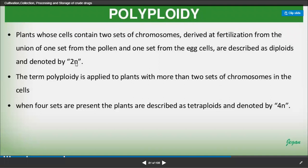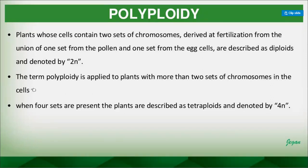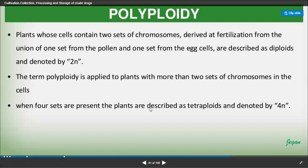The term polyploidy is applied to plants which have more than two sets of chromosomes in the cell. When four sets are present, the plants are described as tetraploids, denoted by 4n.